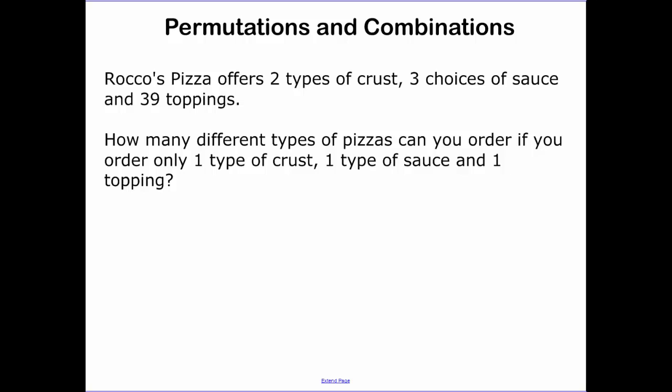This first example I always like to use to set up what we're talking about. Rocco's offers two types of crust, three choices of sauce, and 39 toppings. We want to order a pizza with one type of crust, one type of sauce, and one topping. So we have crust A and crust B.